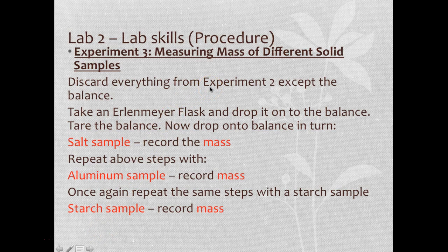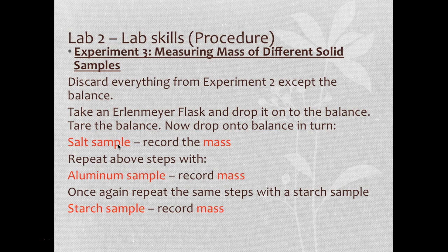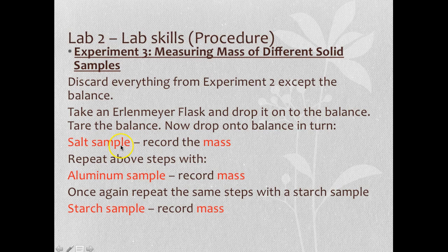Discard everything to clear your workbench. For Experiment 3, take an Erlenmeyer flask, drop it onto the balance, and tare it. Add the salt sample and record the mass. Clear the bench, take a fresh Erlenmeyer flask, tare it, add the aluminum sample, and record the mass. Repeat once more for the starch sample. You are recording the masses of salt, aluminum, and starch.